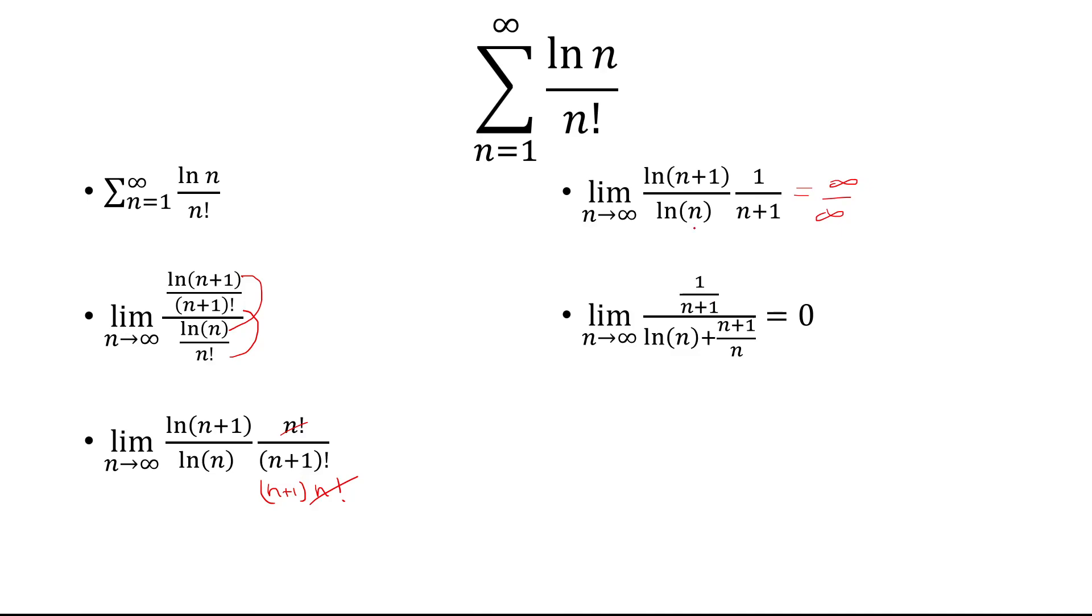The derivative of the top is 1 over n plus 1. The derivative of the bottom, I use the product rule, which is natural log of n plus n plus 1 over n.